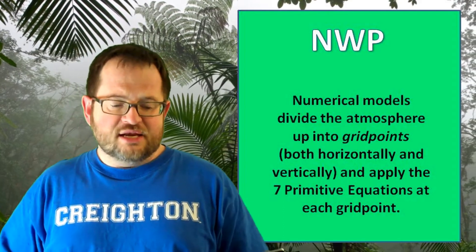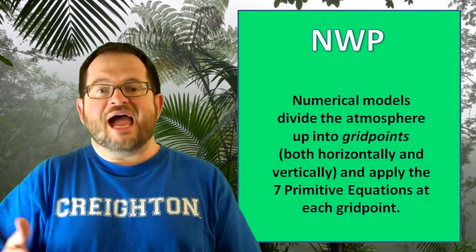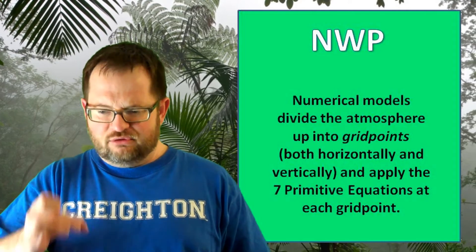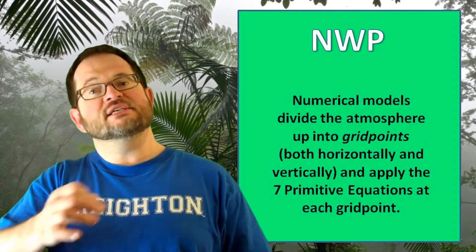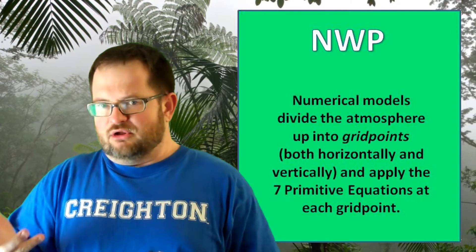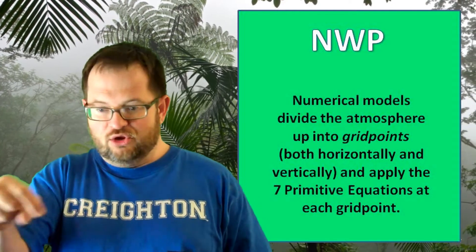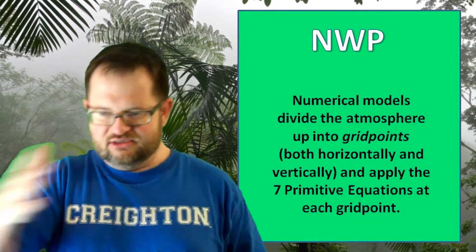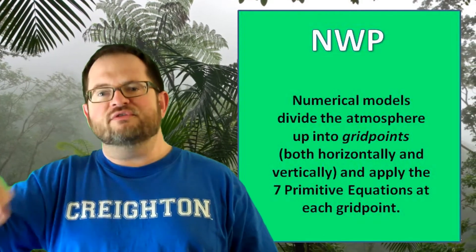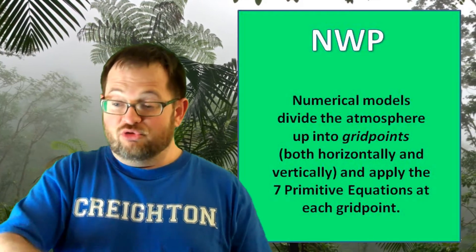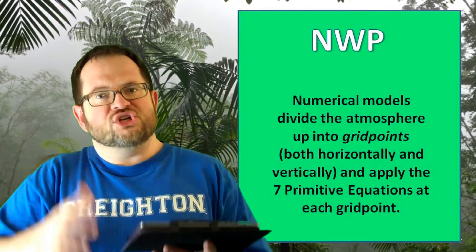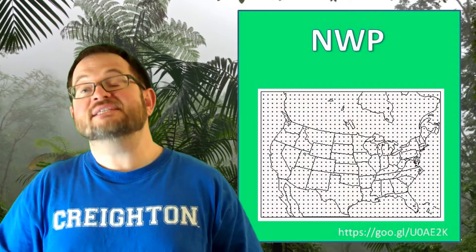Numerical weather prediction, or NWP, is done by dividing the atmosphere up into little grid points — locations in the atmosphere where you're going to be trying to solve the seven primitive equations. They're called grid points because they're usually on a grid, say along latitude and longitude lines. The atmosphere is made up of a three-dimensional grid of locations where you apply the seven primitive equations, both horizontally like on a map, and vertically.